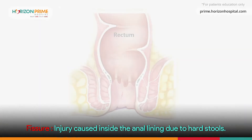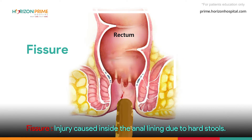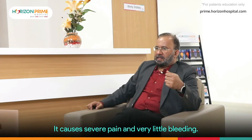What is a fissure? A fissure is actually an injury that is caused inside the anal lining due to hard stool, and this injury causes severe pain. There is hardly any bleeding in this condition. There may be bleeding, but it is just a streak of blood, as compared to piles where you get drops of blood or a jet of blood. This is fissure.